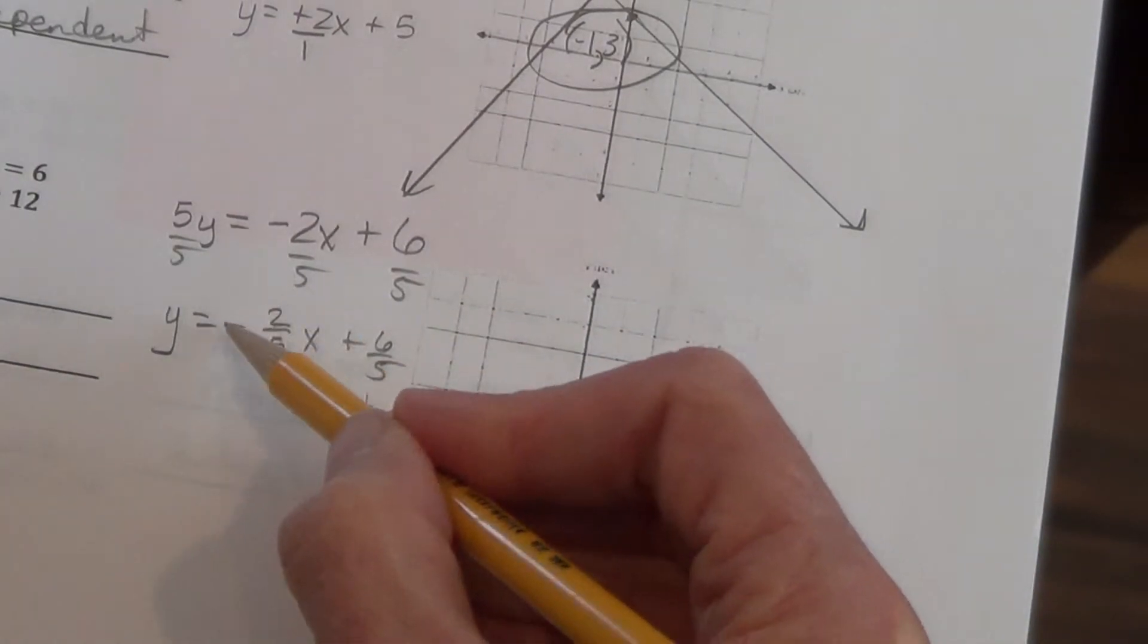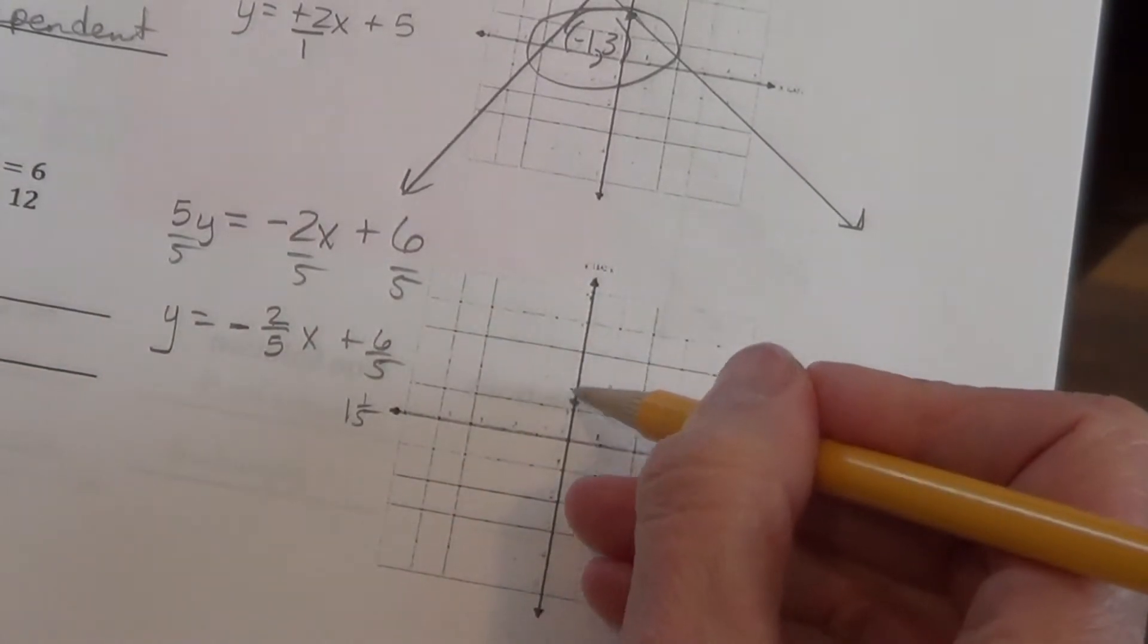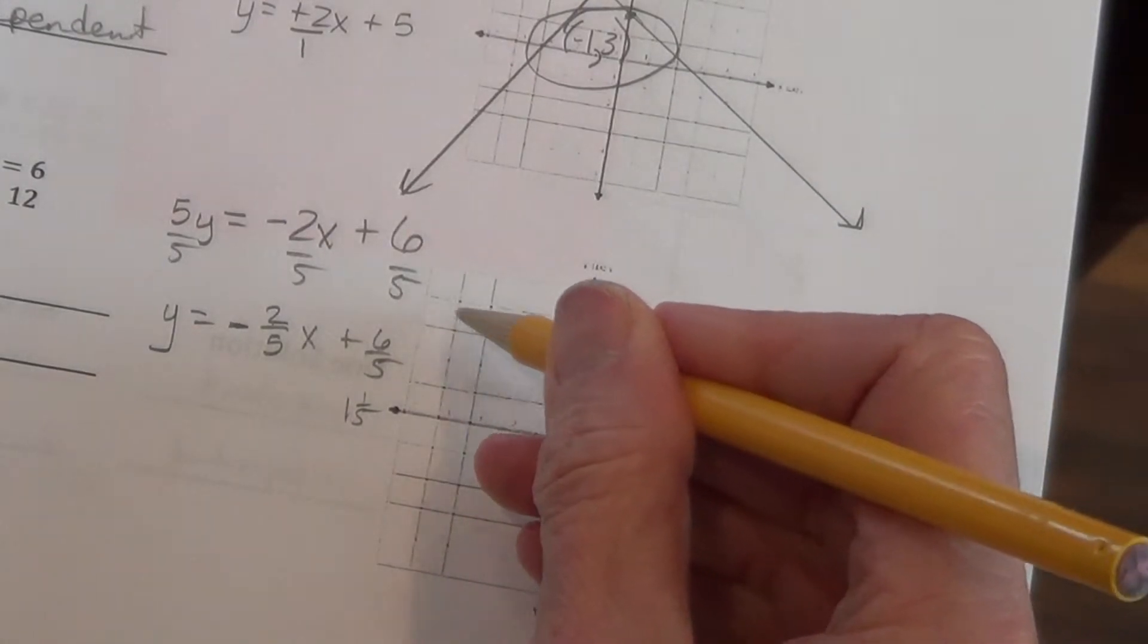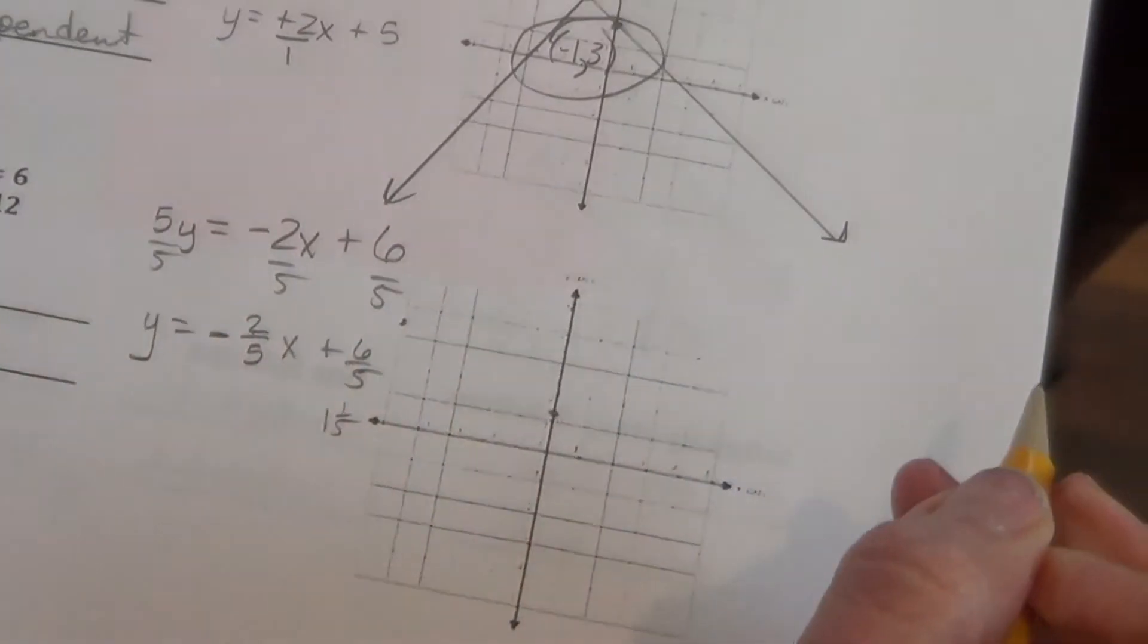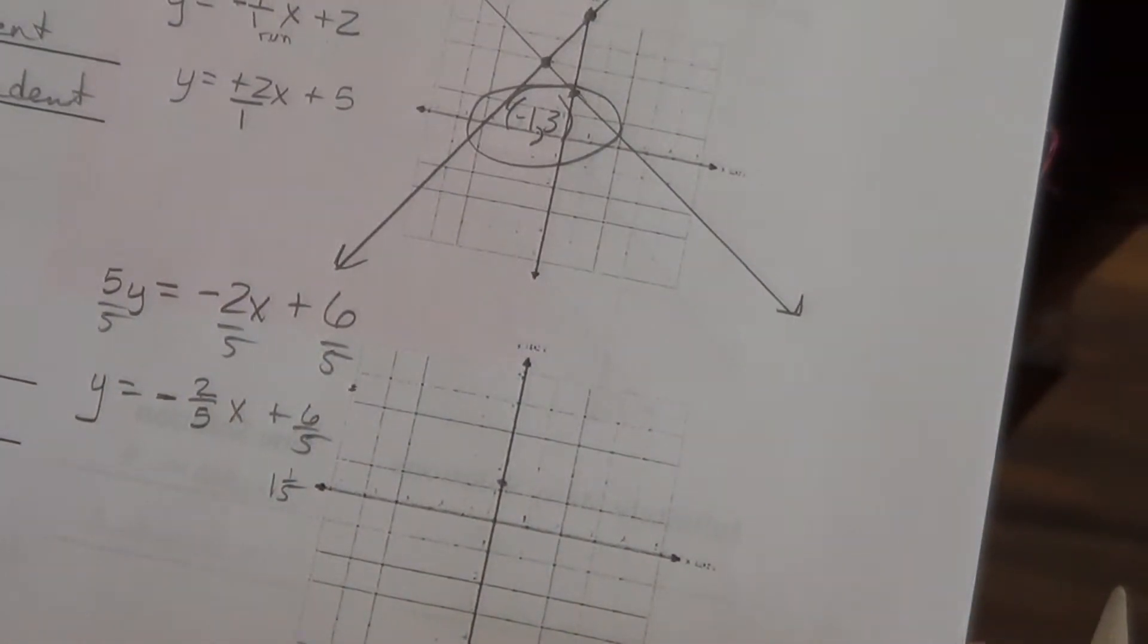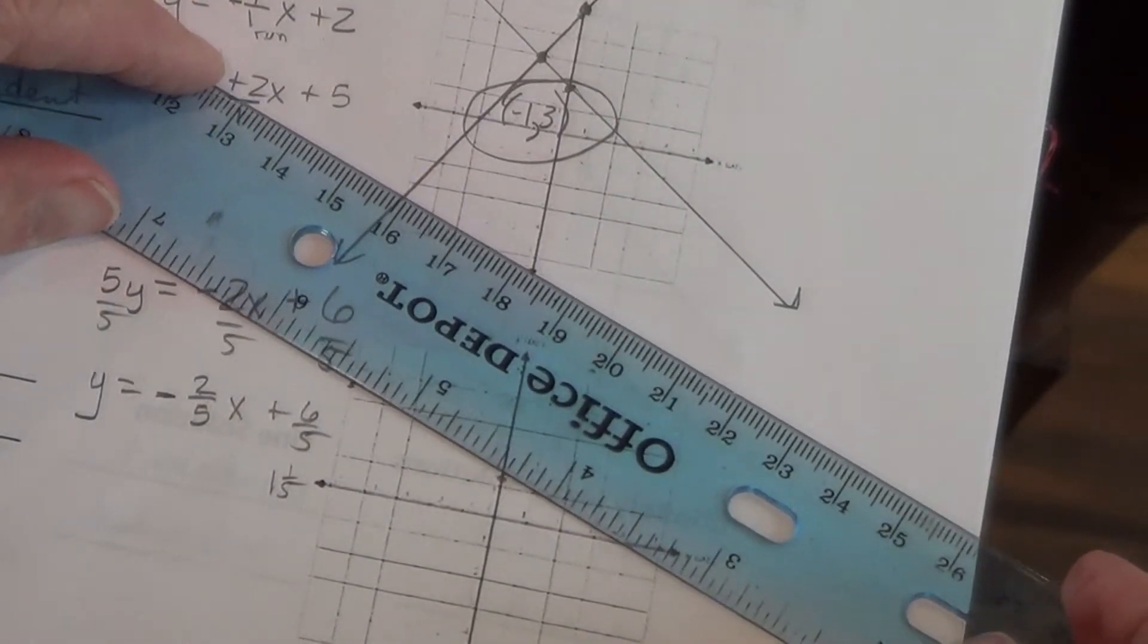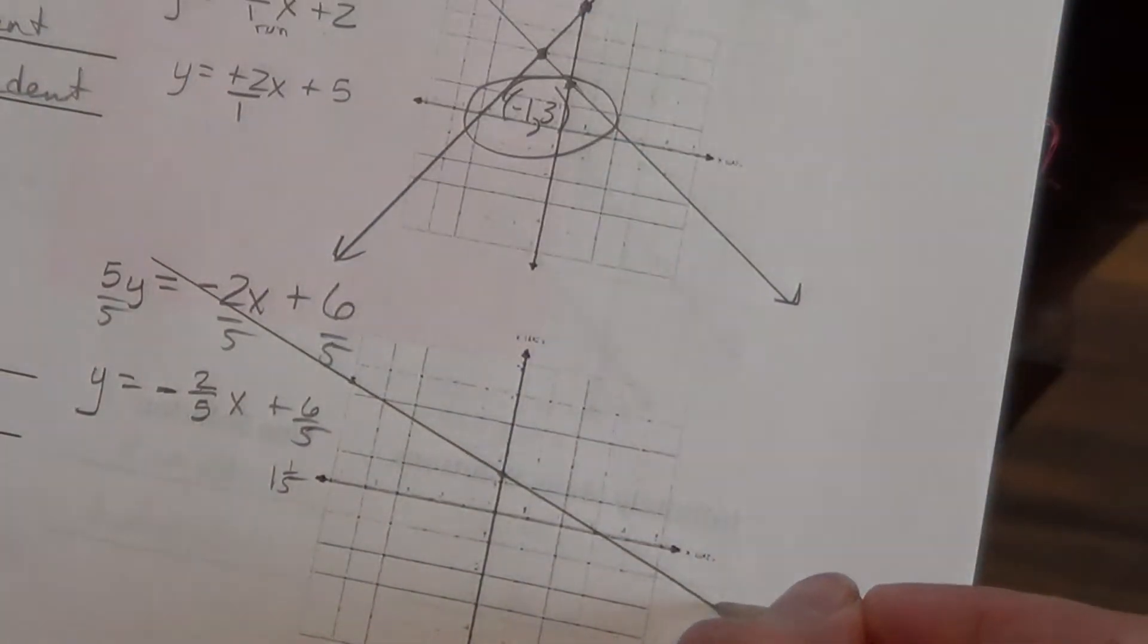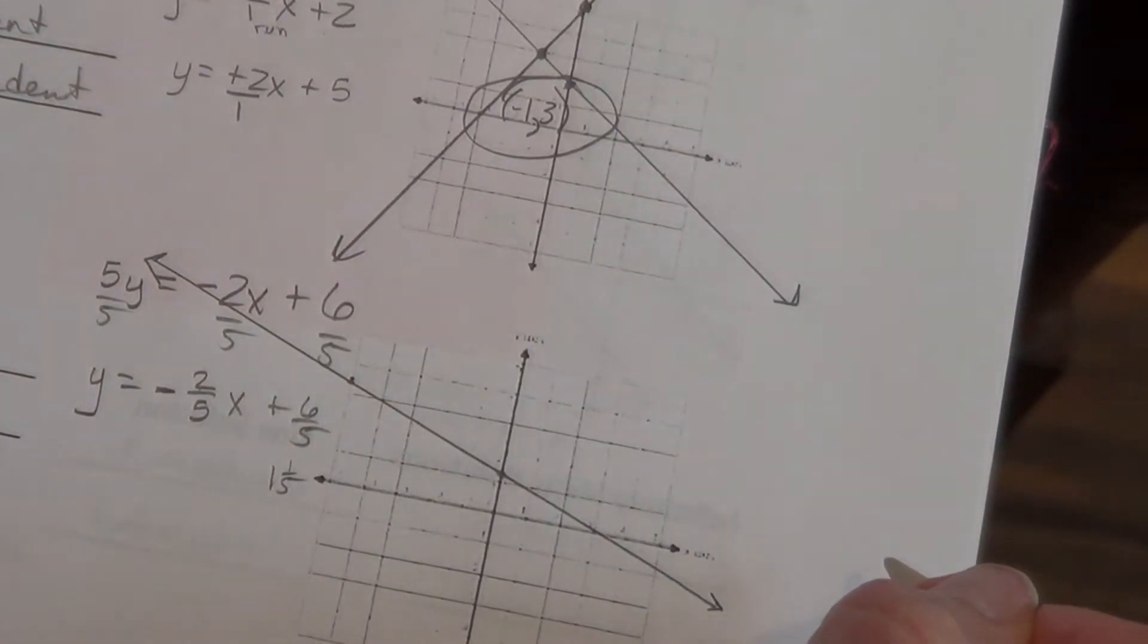From that we're rising 2 and running 5 to the left, because it's negative. So, we rise 1, 2, go over 1, 2, 3, 4, 5. Now, we draw this in.